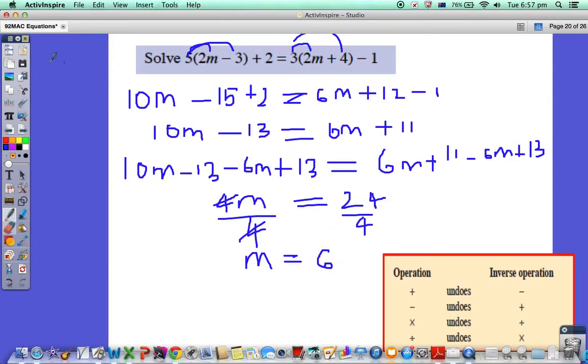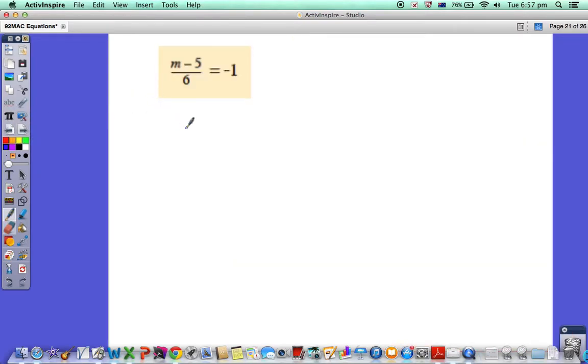Let's go on to the final one. This time we've got a fraction. I still want the m's on this side but I want all the numbers on this side. What we need to do is: what is the opposite to divide by 6? Multiply by 6. So m minus 5, all divided by 6, equals negative 1.